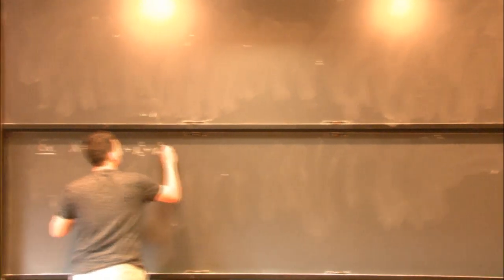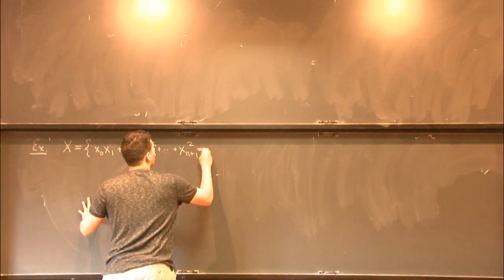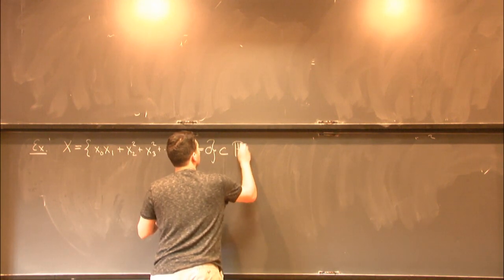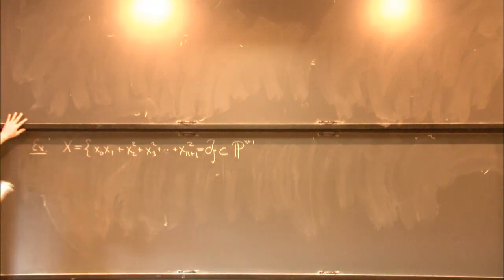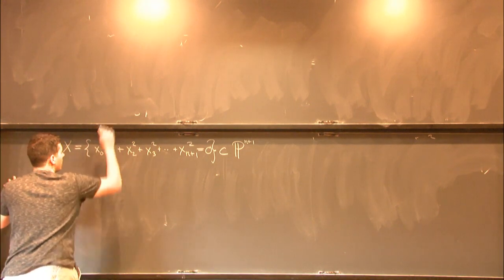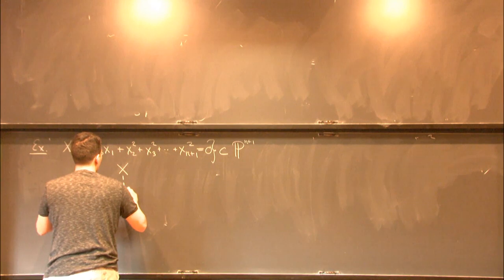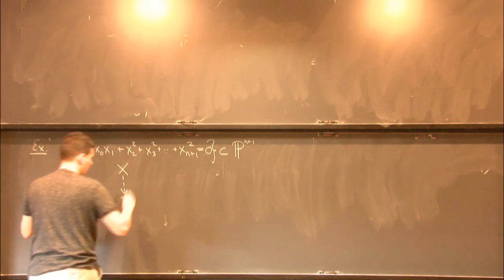So this is a quadratic equation. And I'm thinking of these solutions as sitting inside of an n plus 1 dimensional projective space. And I'll work over the complex numbers in this talk, so that's a complex projective space. And let me just write down an interesting map from this variety x to a projective space of one dimension less.